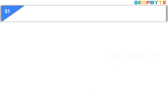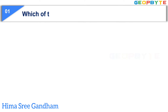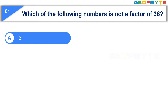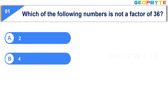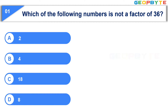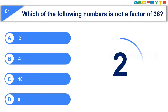The first question is: Which of the following numbers is not a factor of 36? Option A: 2, Option B: 4, Option C: 18, Option D: 8. Your time starts now. Your time is up and the correct answer is Option D, 8.